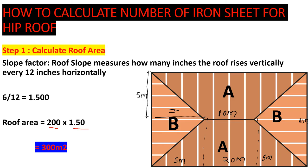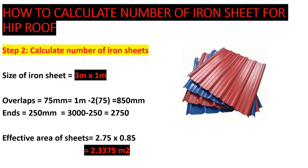Now we proceed to find the number of iron sheets. We've done a video on this before. The size of iron sheets we are using is 3 meters for the length and 1 meter for the width — there are different sizes, but for this video we use 3m × 1m. We also have to account for overlaps.